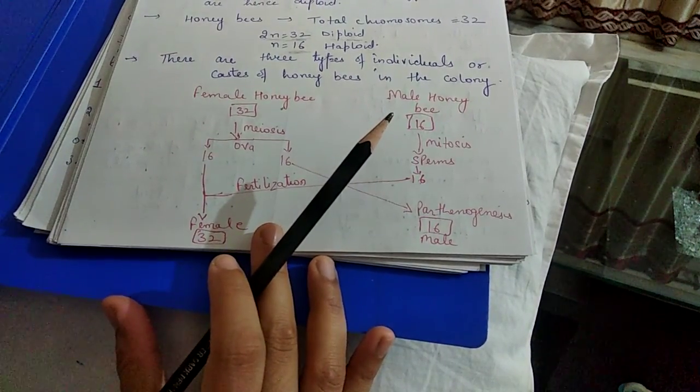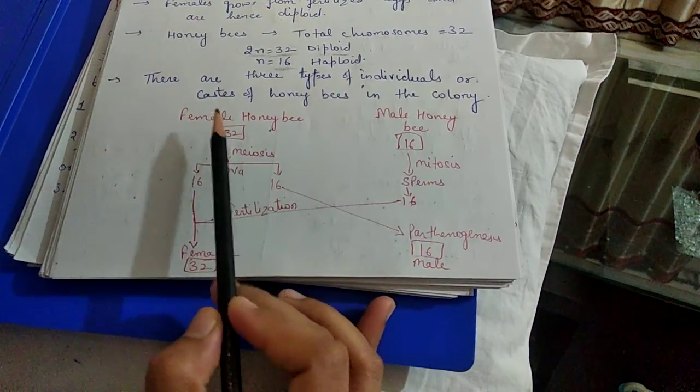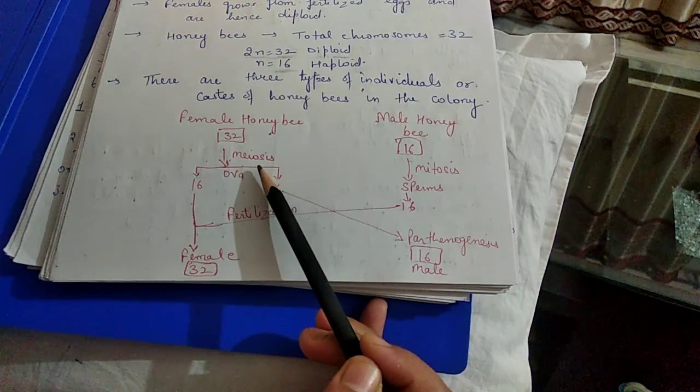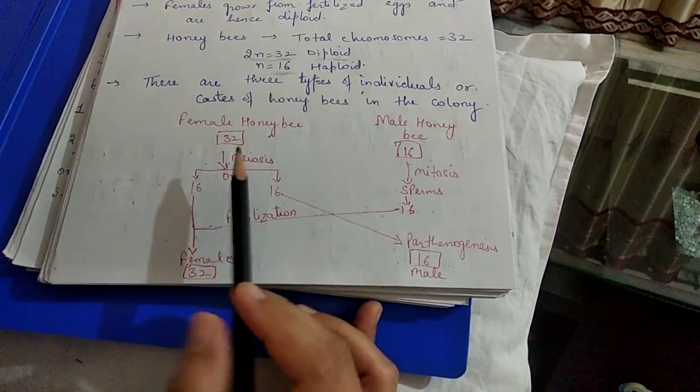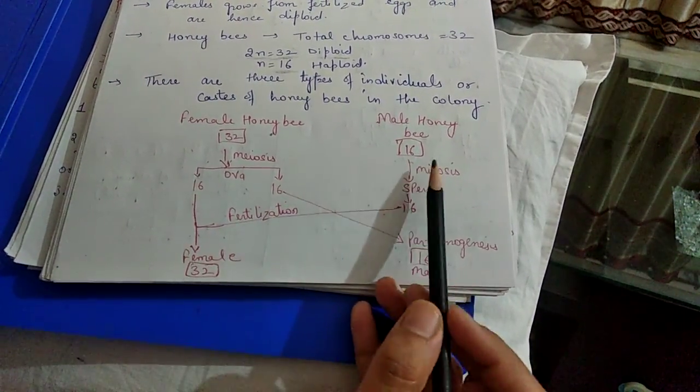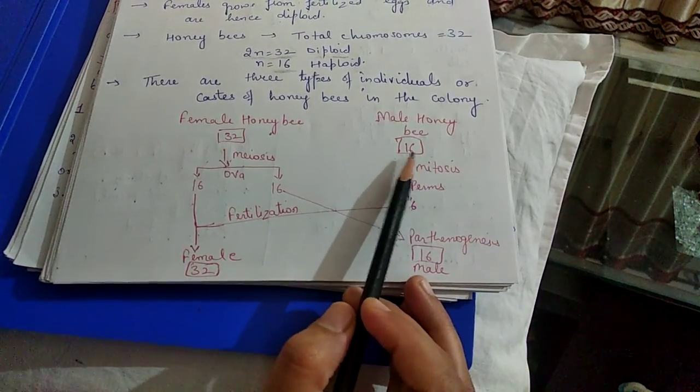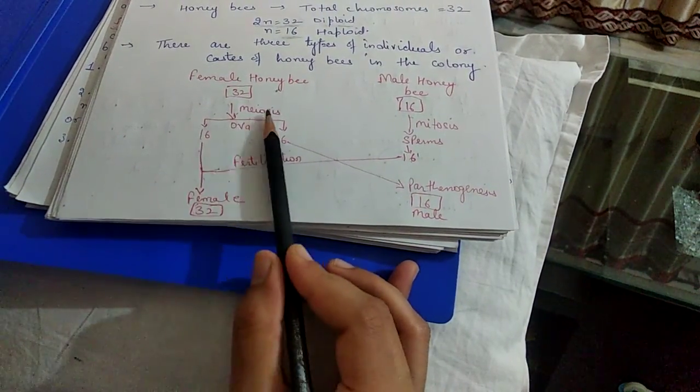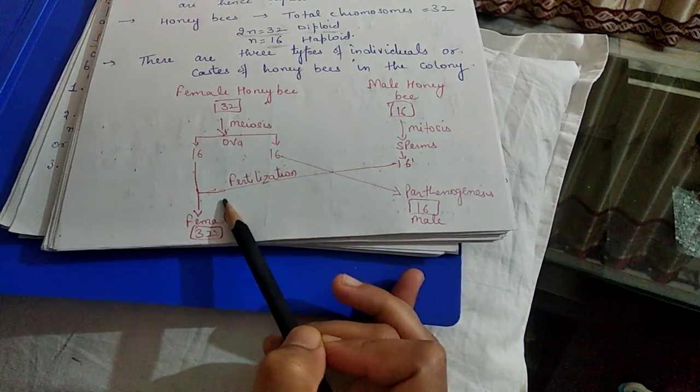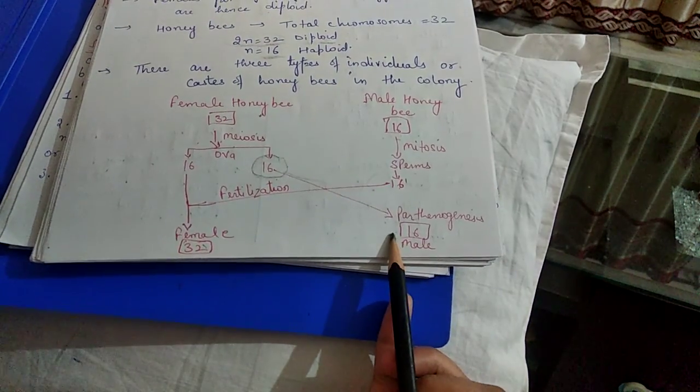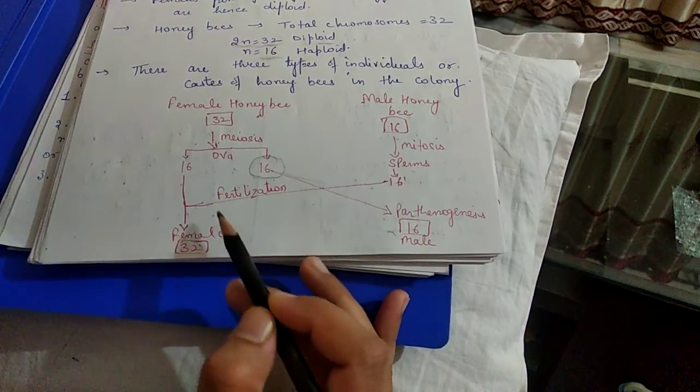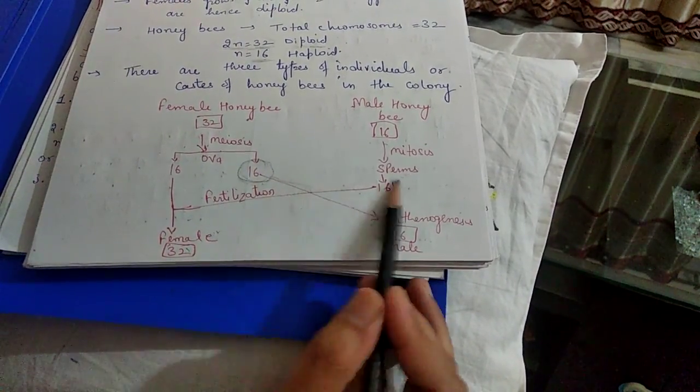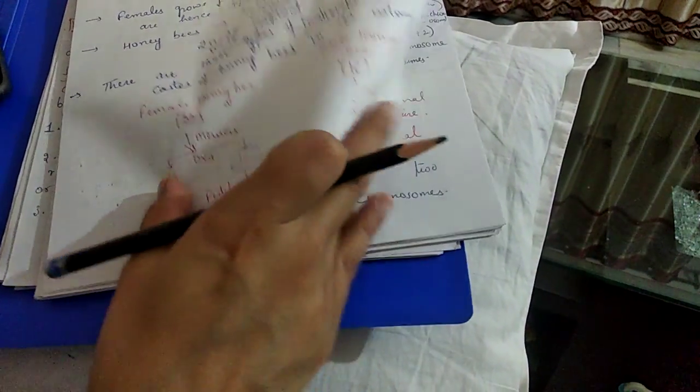Honeybees have three castes. Female honeybees have 32 chromosomes total, male honeybees have 16. Female with 32 chromosomes will undergo meiosis to produce eggs with 16 chromosomes. If that egg undergoes fertilization with sperm, 16 plus 16 equals 32, female will be formed. If some egg develops without fertilization, that will become male with only 16 chromosomes. So female is formed when egg and sperm fuse through fertilization. Male is formed through parthenogenesis when egg develops without fertilization.